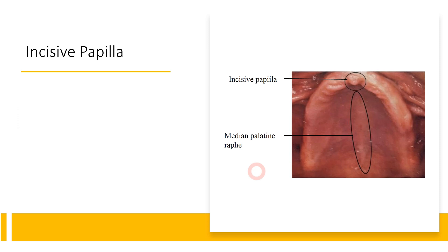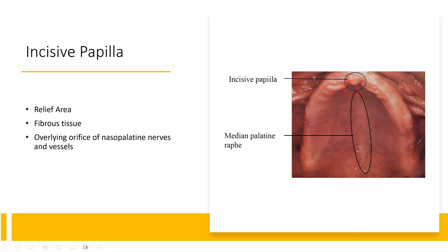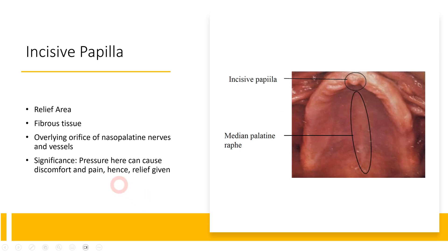Let's talk about the incisive papilla, one of the first relief areas in the maxillary denture. As you can appreciate in this clinical picture, just posterior to the maxillary central incisors, there is a little swelling — this is called the incisive papilla. This is a relief area; we have to relieve this area because if pressure is exerted on this region it can lead to pain, as the nasopalatine nerves and vessels pass through this point. It's a fibrous tissue that forms the orifice opening for nasopalatine nerves and vessels, so relief should be given at the incisive papilla.